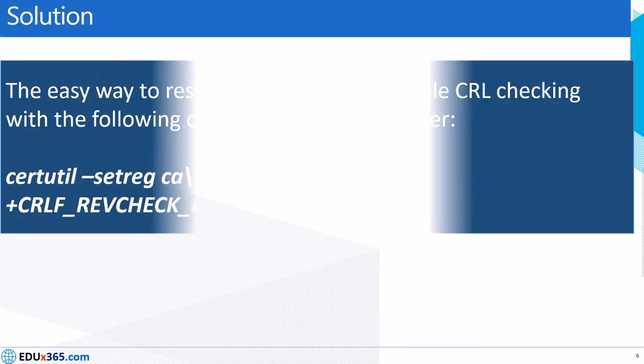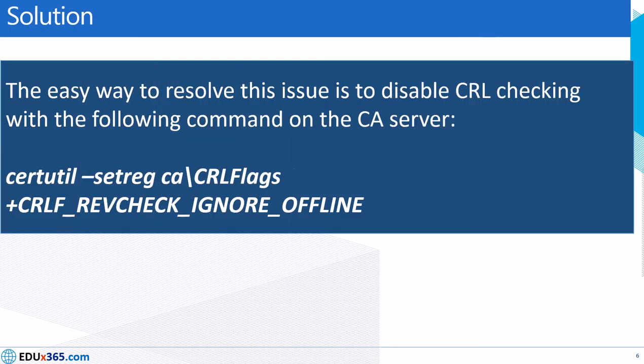The easy way to resolve this issue would be to run a particular certutil command as shown here. This is essentially to disable the CRL checking on the CA server, which could be a subordinate certificate authority.